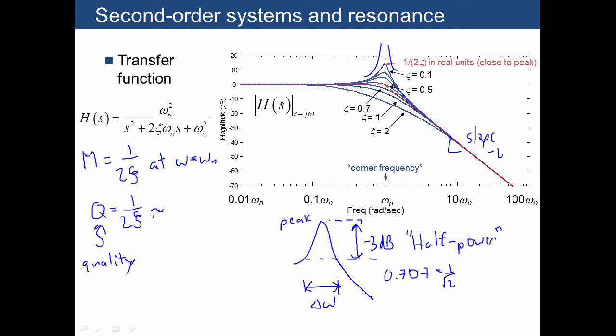There's also an approximation you can make, which is, we remember we said that the higher the peak, the narrower the band. Well, it just turns out that 1 over 2 zeta also describes the ratio between omega r and delta omega. Again, this is saying that the lower the damping ratio, the narrower the band.